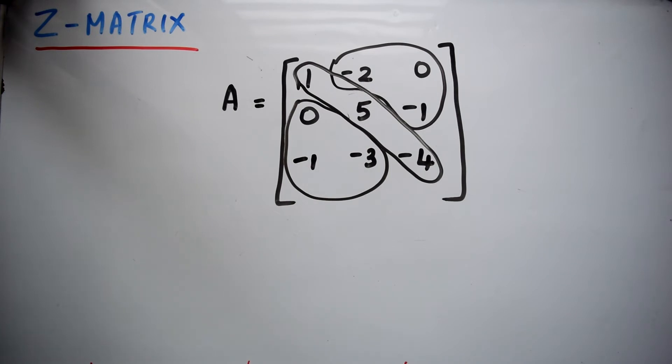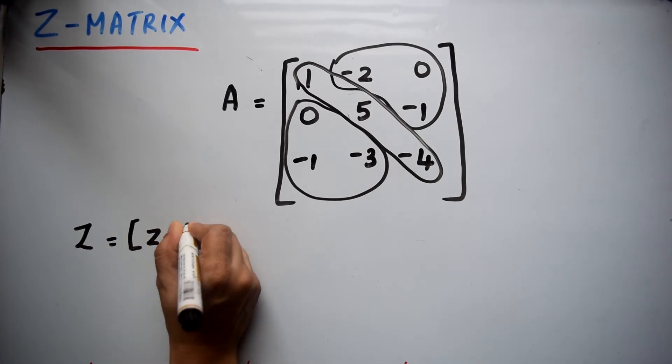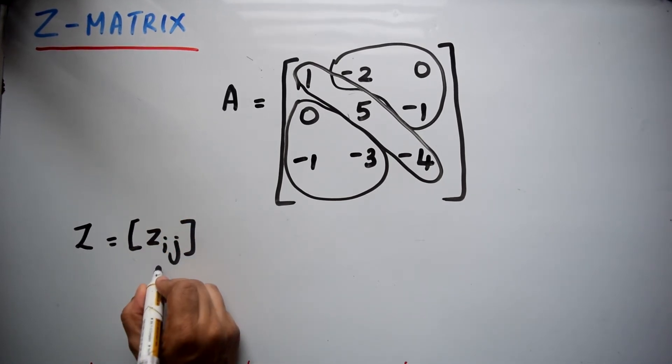So the condition for Z matrix can be written as Z equals Zij, where Zij indicates an element in the i-th row and j-th column of the Z matrix.